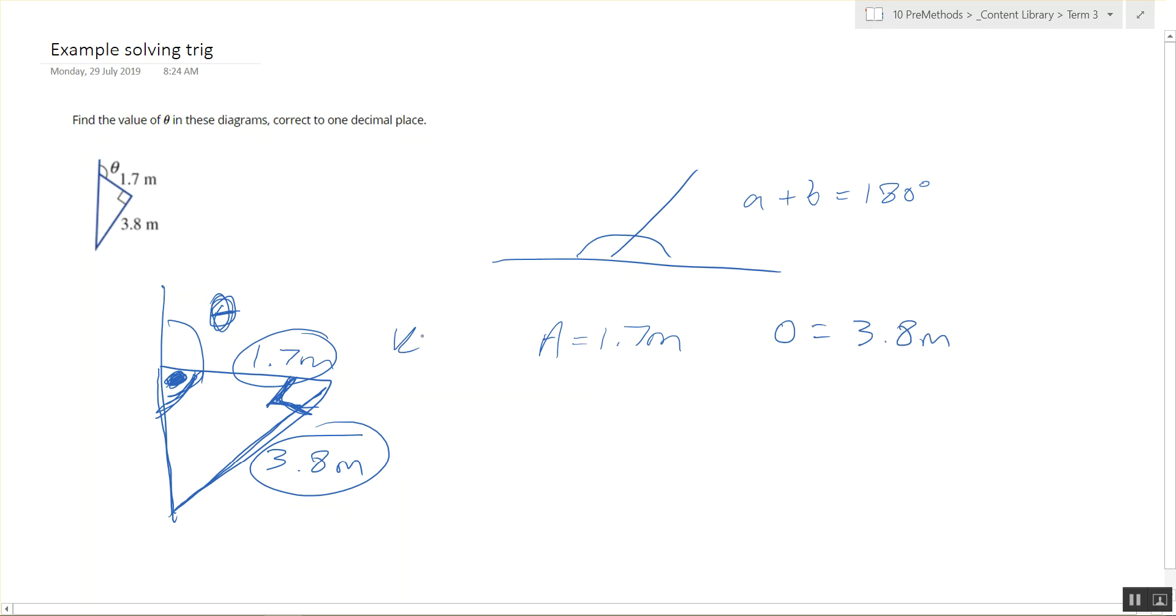So, we write down what we know, we want to find, or we identify we want to know theta. So, we're going to use tan, let's call this alpha. Tan alpha equals opposite over adjacent, which equals 3.8 metres over 1.7 metres.